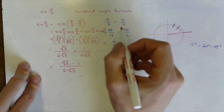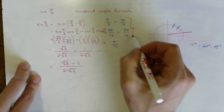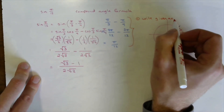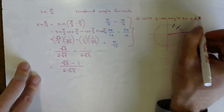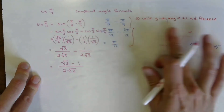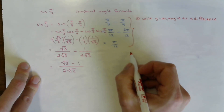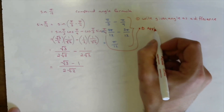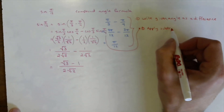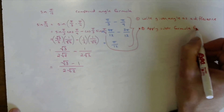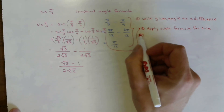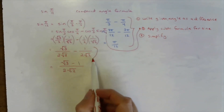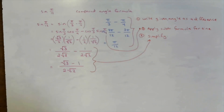So the three steps were: Step 1 — write the given angle as a difference of two special angles. Step 2 — apply the subtraction formula for sine. Step 3 — simplify using exact values from the unit circle.